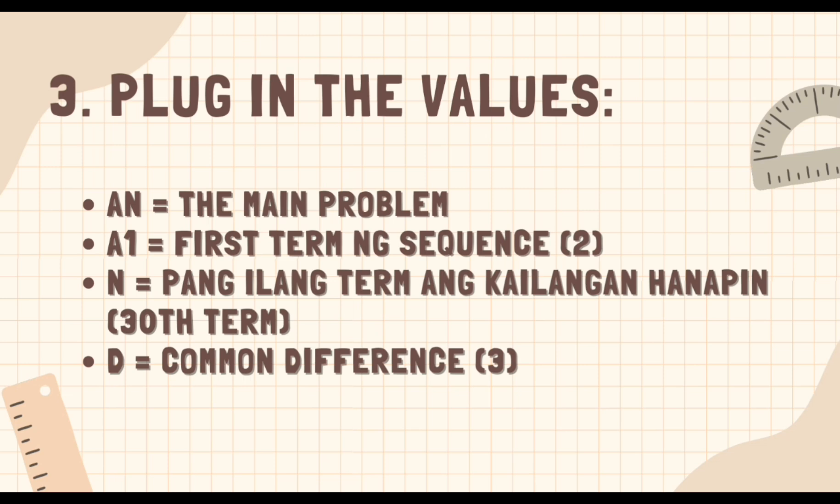Which is a sub n equals to 2, dahil 2 ang first term ng ating sequence sa ating problem, plus the quantity of 30 minus 1, dahil 30th term ang hinahanap sa ating problem, and multiply by 3, dahil 3 ang nahanap natin common difference.